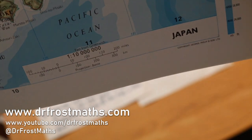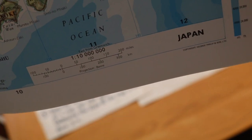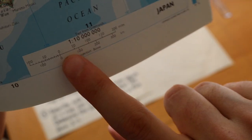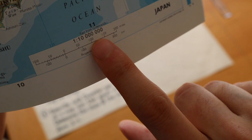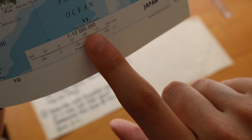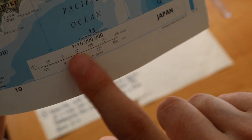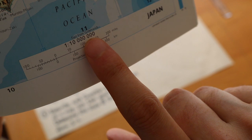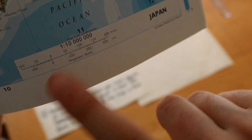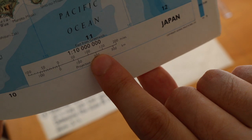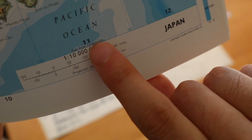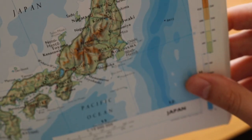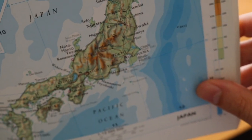Now I'm holding up this map of Japan from a very old atlas I have, and this scale here at the bottom is 1 to 10 million. What it means is that one centimeter on the map represents 10 million centimeters in real life. As long as I use consistent units it will be the same, so one meter on the map represents 10 million meters in real life. Real life is basically 10 million times bigger than your map here, and that's quite an extreme scale because we're quite zoomed out since we can see the whole of Japan on this particular map.